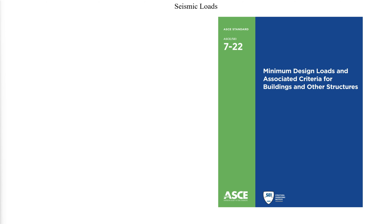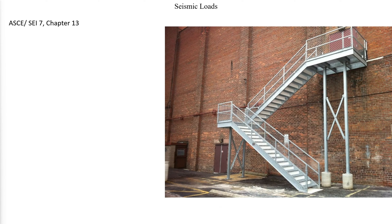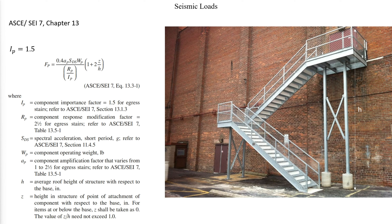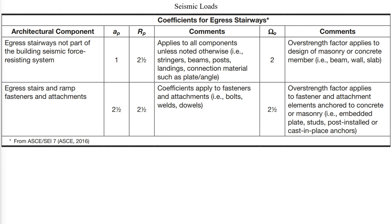Most stairways are not part of the seismic lateral force-resisting system, and determination of seismic forces can be determined from ASCE 7 Chapter 13, Seismic Design Requirements for Non-Structural Components. Egress stairways are required to function for life safety purposes after an earthquake and are therefore required to use the higher component importance factor IP of 1.5. The horizontal seismic design force FP is applied at the center of gravity of the component and must be applied independently in at least two orthogonal horizontal directions. Coefficients for architectural components for egress stairs are provided in this table.